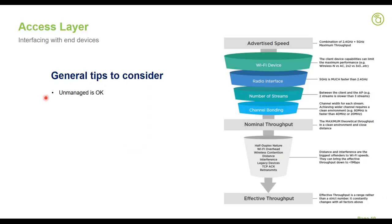At the access layer, unmanaged switches make sense from a cost effectiveness and ease of deployment standpoint. I would account for 20% to 30% port expansion in the future for any access switch unless it's a special case. If you have a requirement for seven or eight cameras, do not get an eight-port PoE switch — get a 16-port PoE switch to ensure future expansion coverage. It's really hard for the customer to come back a year later asking to add one or two cameras, only to discover you need to swap the switch for a couple hundred dollars extra. So plan for expansion.